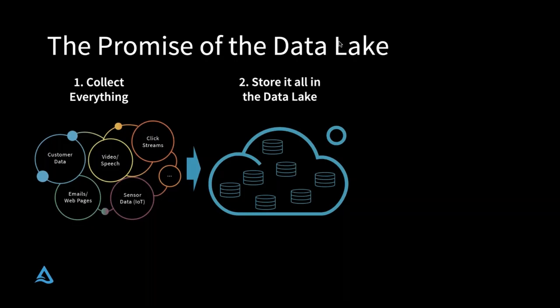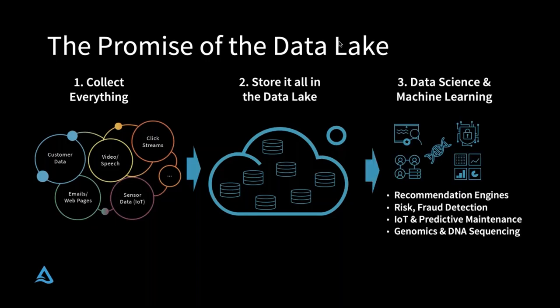It might be raw click streams coming from your web server, or unstructured data from a bunch of sensors. The promise of a data lake is you can take all of that and just dump it in the data lake. This is really powerful compared to a traditional database, where you have to start by coming up with a schema — this is often called schema-on-write. A data lake allows you to forego that process and just start by collecting everything, because sometimes you don't know why data is valuable until much later. It could be S3, HDFS, or Azure Blob Storage. Once you've collected it all, you can get insights — do data science, machine learning, build recommendation engines, fraud detection algorithms, or even cure cancer using genomics and DNA sequencing.